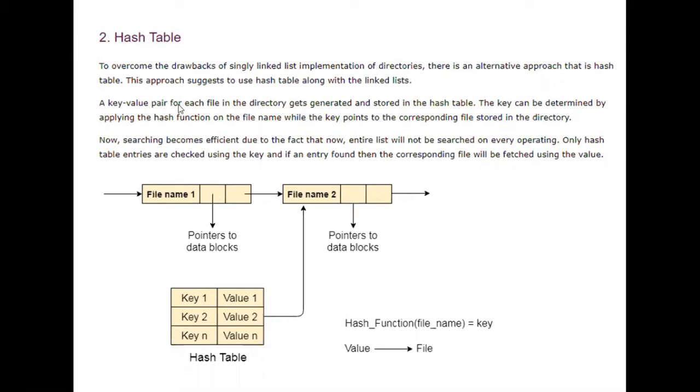A key-value pair of each file in the directory gets generated. So here you can see the key-value pair - this is the key and this is the value. The key can be determined by applying the hash function on the file name, while the key points to the corresponding file stored in the directory. The major disadvantage of linear list implementation is you have to apply linear search if you want to access any file. That disadvantage can be overcome by implementing the hash table.